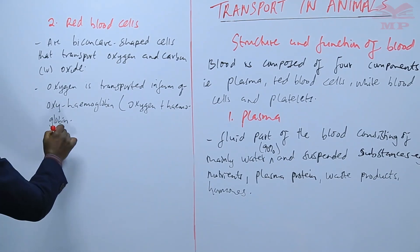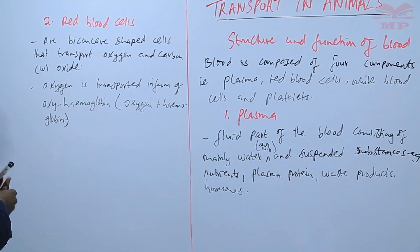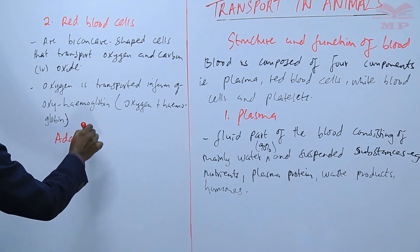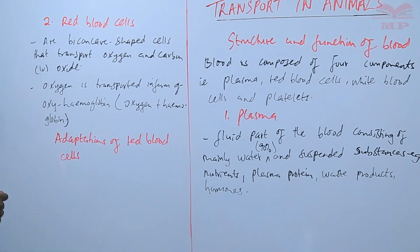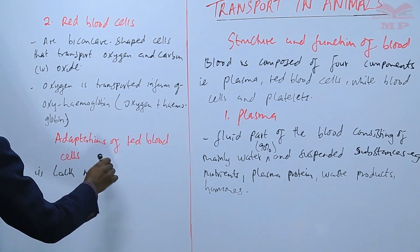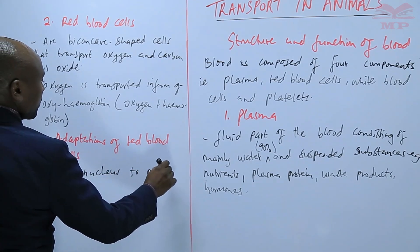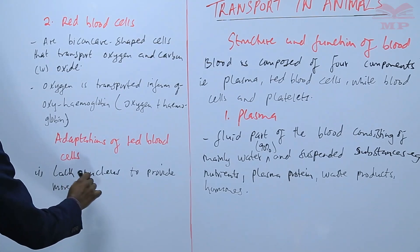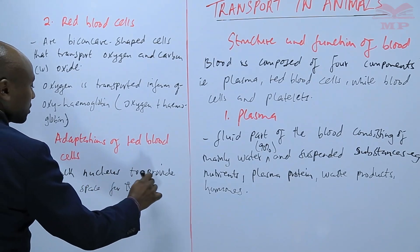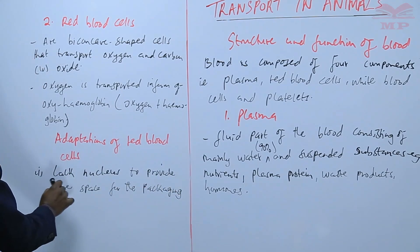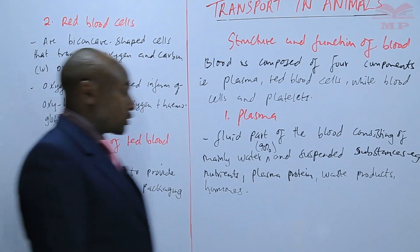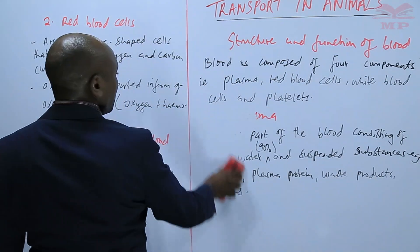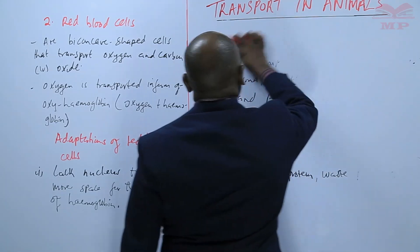It's also important to look at the adaptations of red blood cells so that they can carry out their functions effectively. Adaptation one: they lack a nucleus to provide more space for the packaging of haemoglobin. And of course haemoglobin is for transportation of oxygen and carbon dioxide, which are the main gases transported by the red blood cells.